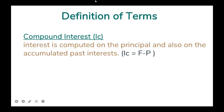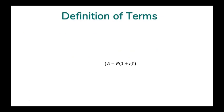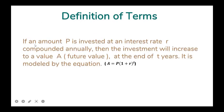Compound interest, denoted IC, is interest computed on the principal and also on the accumulated past interest. The compound interest is equivalent to the future value minus the principal (IC = F − P). If an amount P is invested at an interest rate R compounded annually, the investment will increase to a future value A at the end of T years, modeled by the equation: A = P × (1 + R) raised to T.